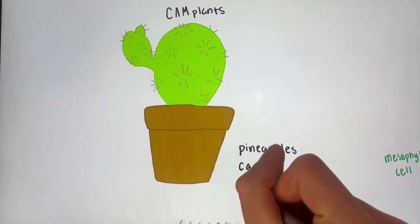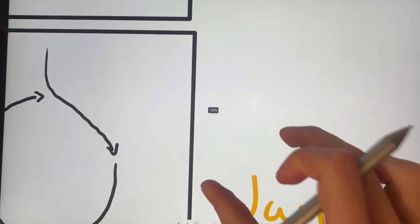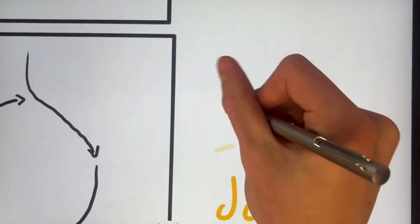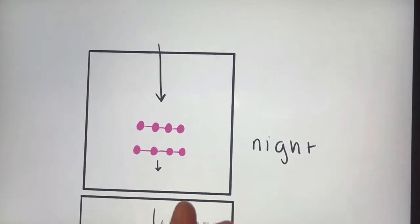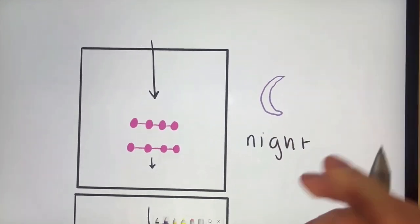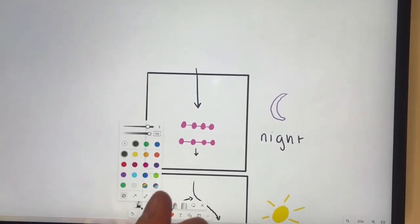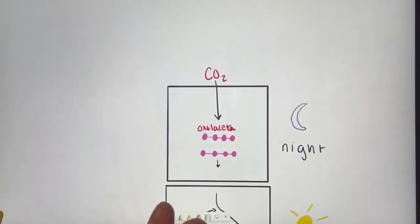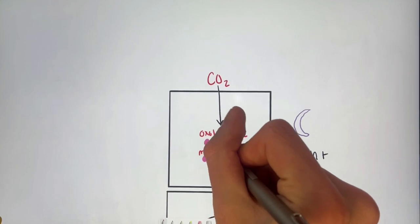CAM plants have a process that is unique compared to other plants. Instead of separating light-dependent reactions and dark reactions in space, they are separated in time. The stomata opens during the night and takes in CO2 to store as organic acids in the vacuoles. During the day when sunlight is available, the CO2 is released and used in the Calvin cycle for photosynthesis.